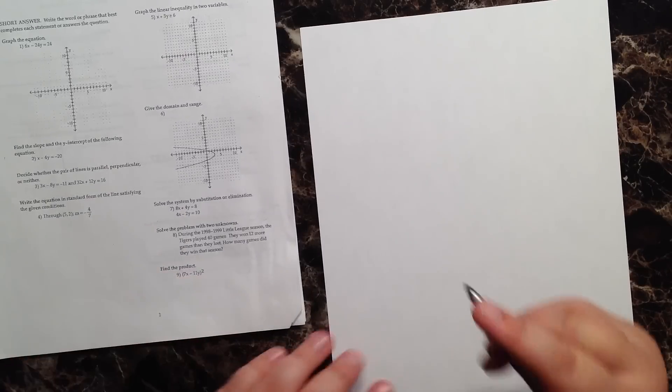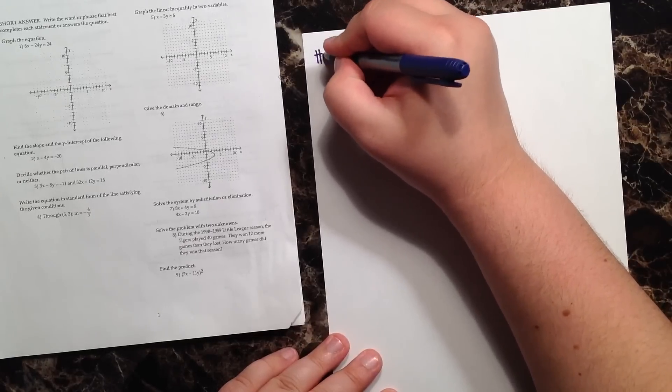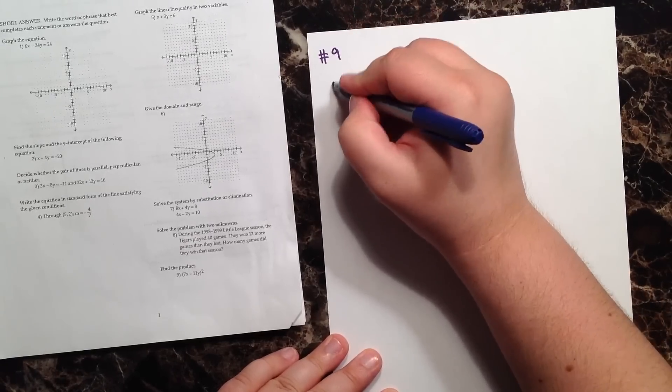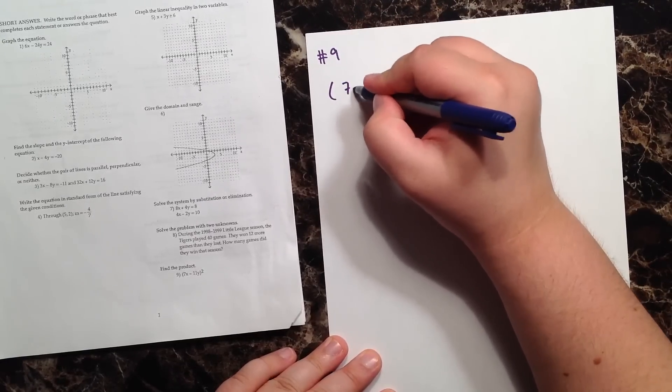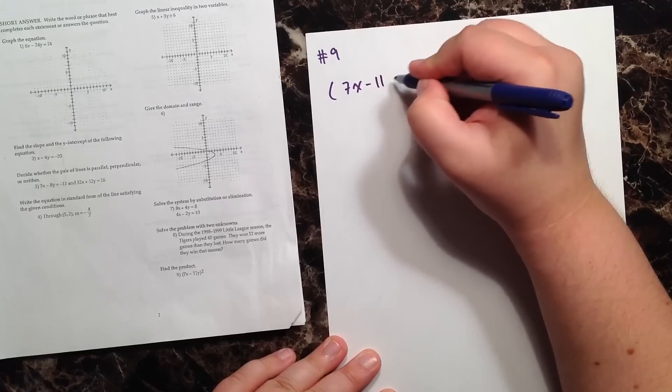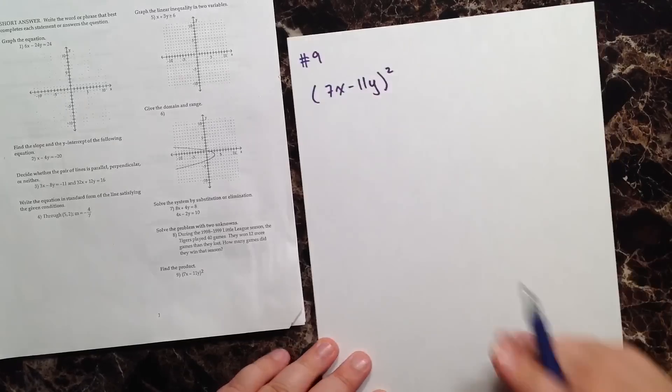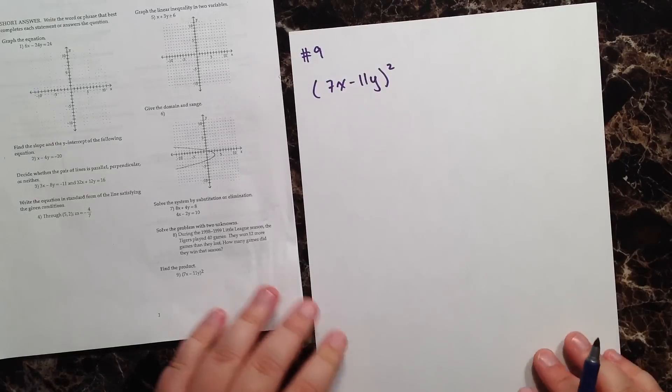It just says find the product and they give us a binomial of (7x - 11y)².